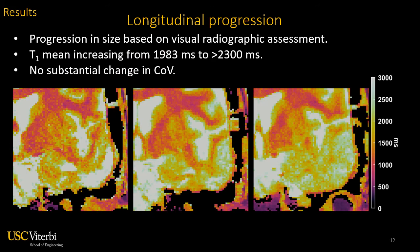Here shows the results of an interesting case with substantial tumor progression. The progression also coincided with an increase in mean T1 values from 908 milliseconds to over 2300 milliseconds. There was no substantial change in coefficient of variation in spite of the progression. More information such as treatment history might strengthen the diagnostic value of high-resolution T1 mapping.